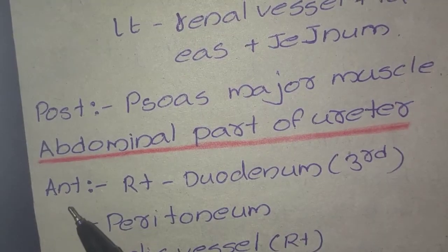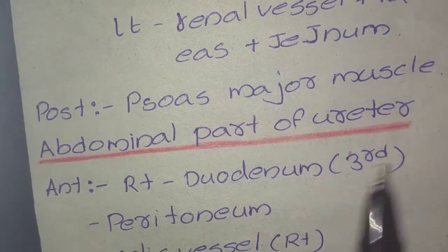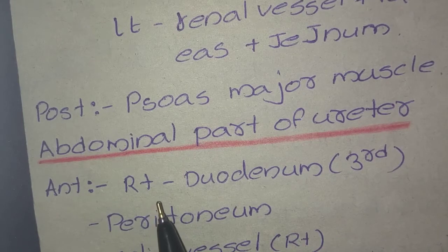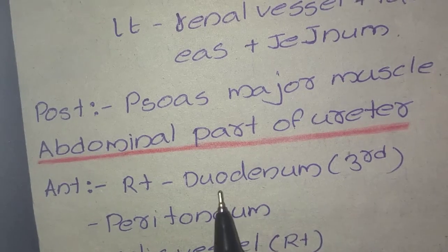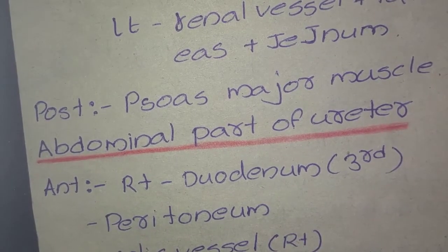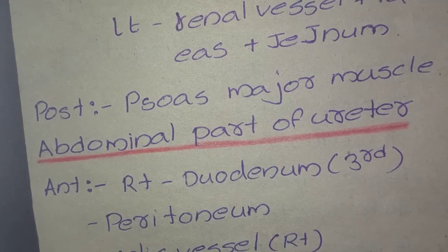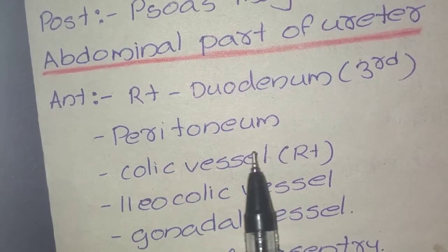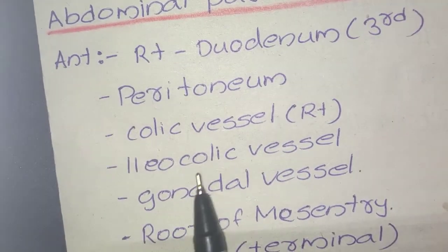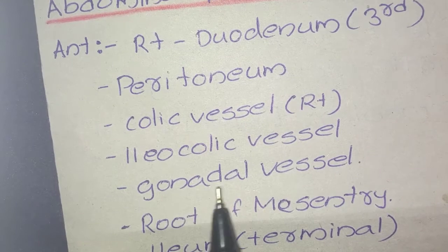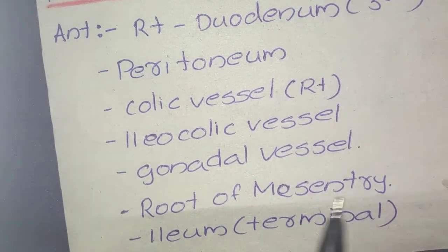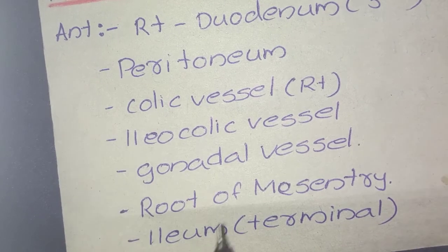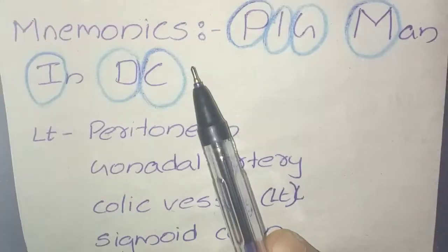For the abdominal part of the ureter, the anterior relations on the right side include: the third part of the duodenum, peritoneum, right colic vessel, ileocolic vessel, gonadal vessel, root of mesentery, and the terminal part of the ileum.